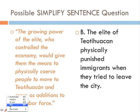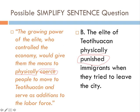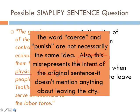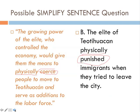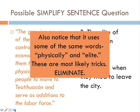Answer choice B states that the elite of Teotihuacan physically punished immigrants when they tried to leave the city. We do see the word "physically," which is referenced in the original sentence. But are "coerce" and "punish" exactly the same idea? Not necessarily. This doesn't represent the same information as the original sentence. Also, the original sentence says nothing about immigrants leaving the city. Additionally, it uses some exact same words such as "physically" and "elite" — those are probably tricks. There's enough wrong with choice B that we can eliminate it.